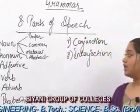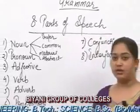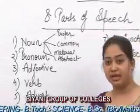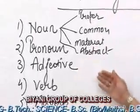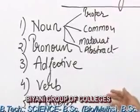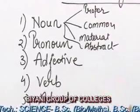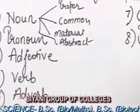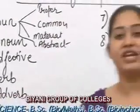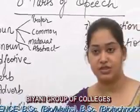Number 1, we have noun. Then pronoun, adjectives, verb, adverbs, preposition, conjunction, and interjection. It's a blend of 8 parts of speech.